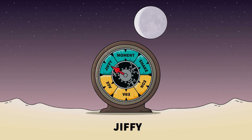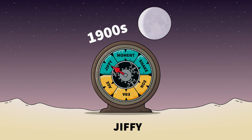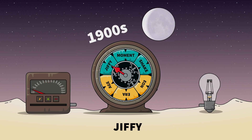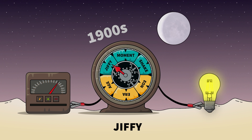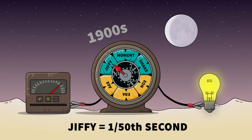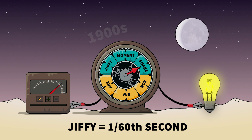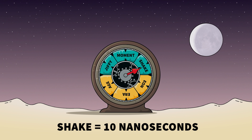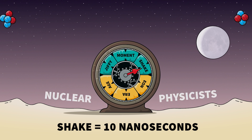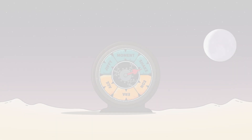A jiffy is a lot shorter. In the 1900s, the scientific community used it to describe the cycle of an alternating power supply, usually 1/50th or 1/60th of a second. Finally, we have the shake, which is shorter still. At 10 nanoseconds, it's used by nuclear physicists to measure the time of a reaction.